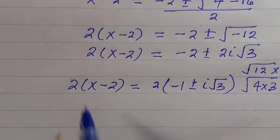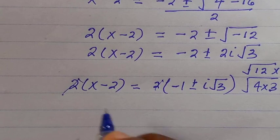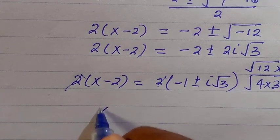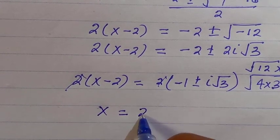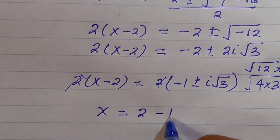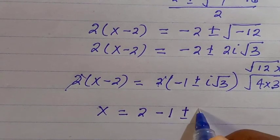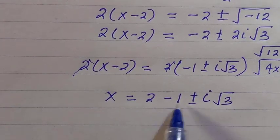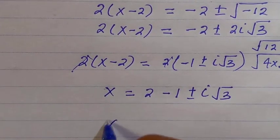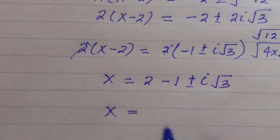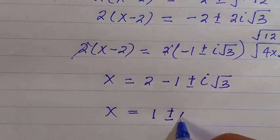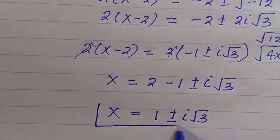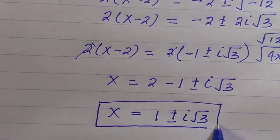Canceling the 2, we have x minus 2 equals minus 1 plus or minus i root 3. Taking 2 to the other side, x equals 2 plus minus 1 plus or minus i root 3, which gives x equals 1 plus or minus i root 3. This is the second solution to the problem.